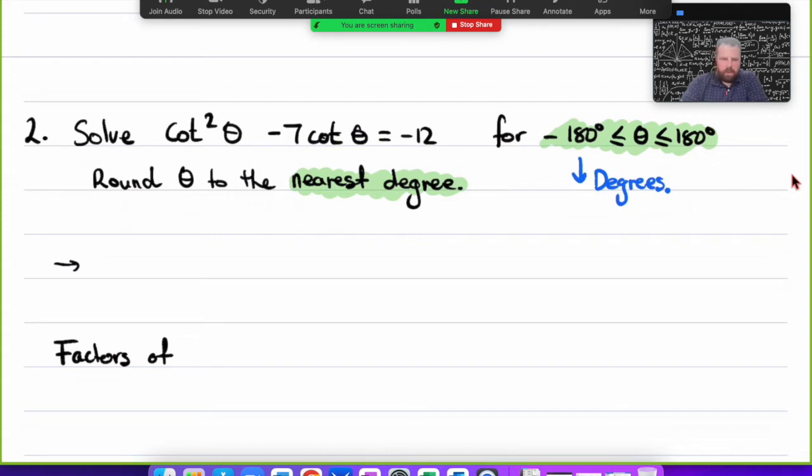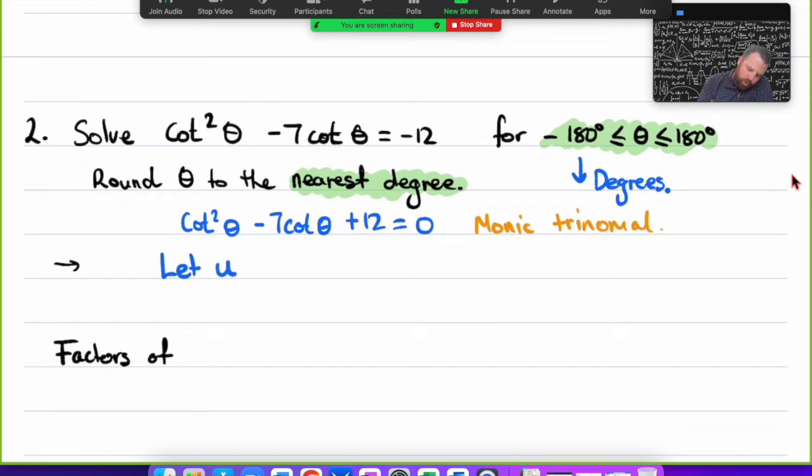Looking at this, they're both cot which is okay. I'm not seeing any trig identities, but if I rewrite it as cot²θ - 7cot θ + 12 = 0, I'm starting to see something squared, a single term, a constant. I'm starting to see it's a monic trinomial. So I'm going to let u = cot θ. What we end up with is u² - 7u + 12 = 0.